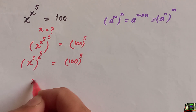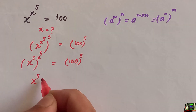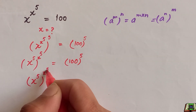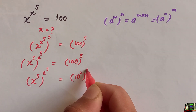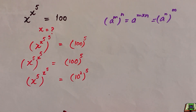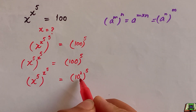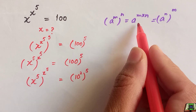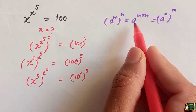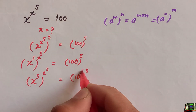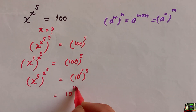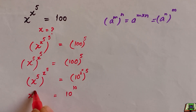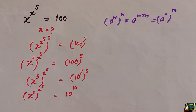On the right-hand side, we can write 100 as 10 to the power 2, so 100 to the power 5 becomes 10 to the power 2 times 5. Since 2 times 5 is 10, this simplifies to 10 to the power 10. So we have x to the power 5, whole to the power x to the power 5, equal to 10 to the power 10.